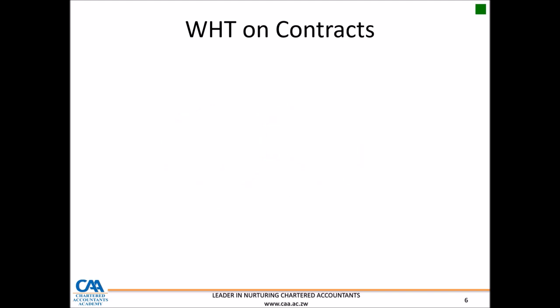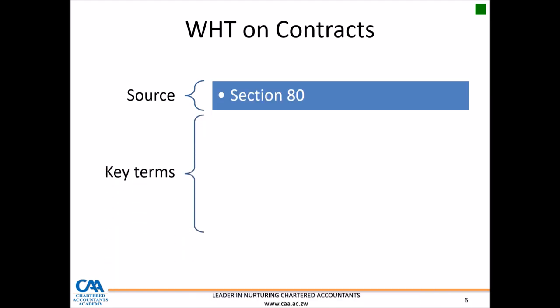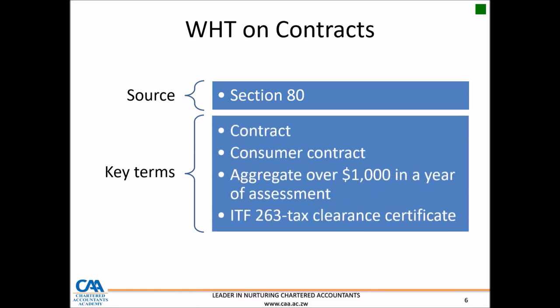What withholding tax covers delinquent taxpayers? This will be withholding tax on contracts, covered by Section 80 of the Income Tax Act. The key terms to look at are firstly contracts, and the definition of a contract and of a consumer contract, which you'll find under Section 2. Generally, if the person receiving a payment does not have a valid ITF 263 — a valid tax clearance certificate — the person making the payment will need to withhold a certain amount. As long as that payment is above $1,000 in aggregate in a given year of assessment, the payer will need to withhold a rate of 10% from every payment made.